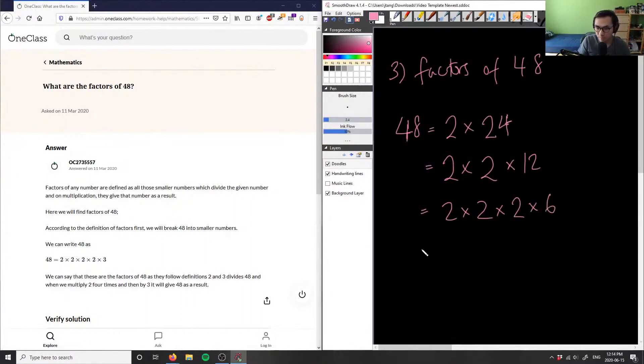And then finally, 6 here can be divided, can be broken down into, again, I know that 6 is an even number, which means 2 must also be a prime factor. And then 6 divided by 2 here is equal to 3. And now we stop here because 3 is a prime number in itself.